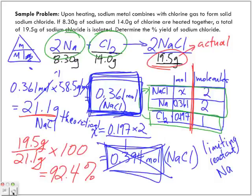We want three significant digits. So is that a good percentage? Were we able to obtain a lot of the product? Yes.